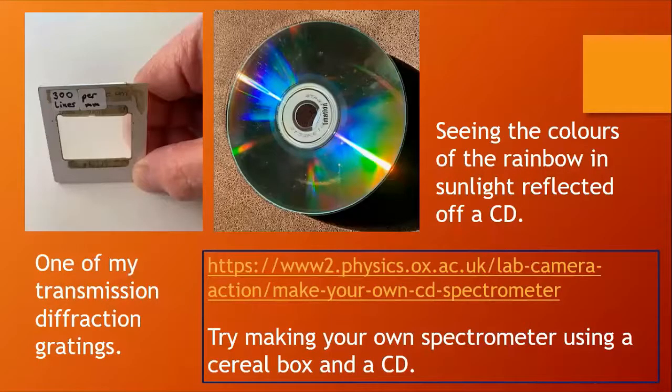Here is one of my diffraction gratings on the left to give you an indication of size, but diffraction gratings used in scientific instruments are usually much smaller. This is a glass diffraction grating, light is transmitted through it, but we do get reflection gratings as well. Ultraviolet light, for example, wouldn't get through a glass diffraction grating of the sort that is on the left, but we could detect it from a reflection grating.